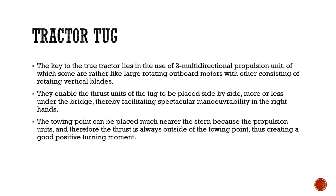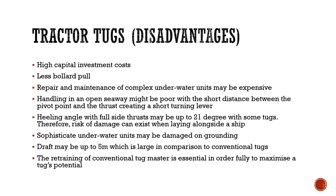However, tractor tugs also have certain disadvantages. Firstly, they are considered a very high capital investment — a lot of money is required to buy and maintain these tugs. They have less bollard pull, and the repair and maintenance of complex underwater units is quite expensive. Handling in open seaway might be poor. The short distance between the pivot point and the thrust creates a short turning lever. Heeling angle with full side thrust may be up to 21 degrees, so risk of damage can exist when laying alongside a ship.